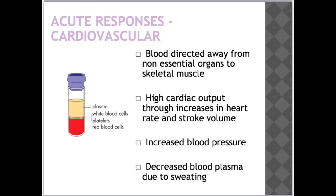Acute responses in the cardiovascular system include blood directed away from non-essential organs to skeletal muscle, high cardiac output through increases in heart rate and stroke volume, increased blood pressure, and decreased blood plasma.